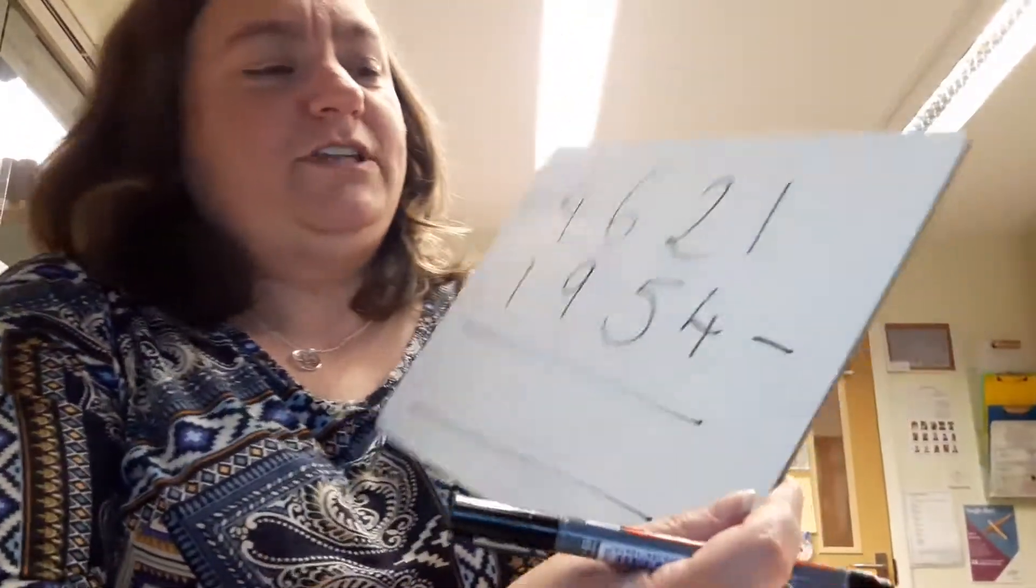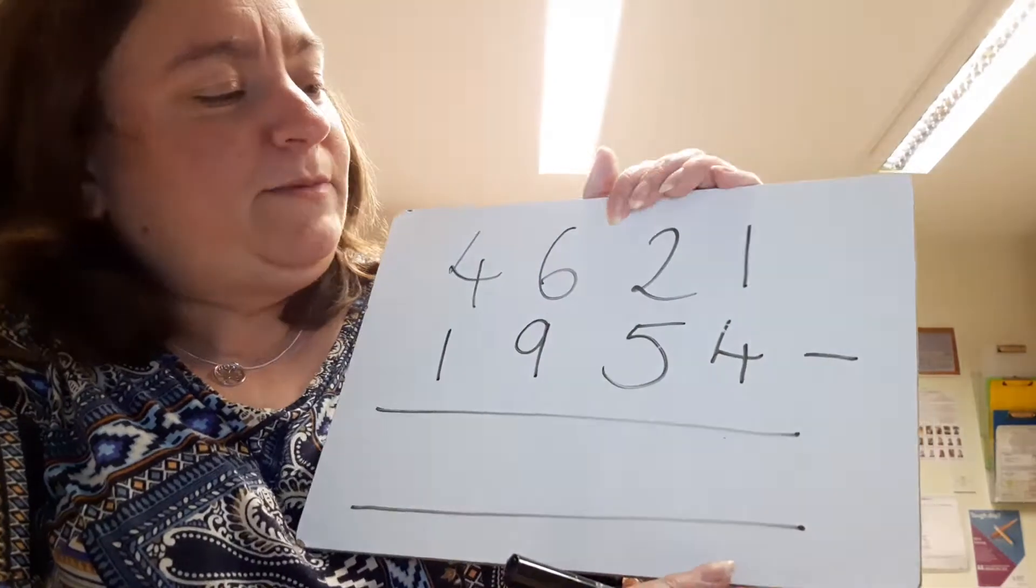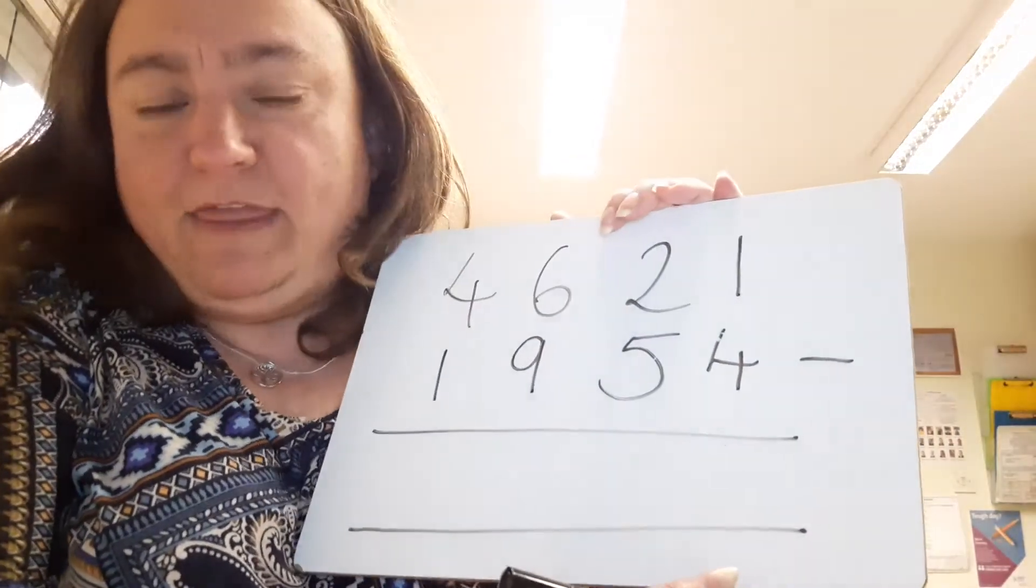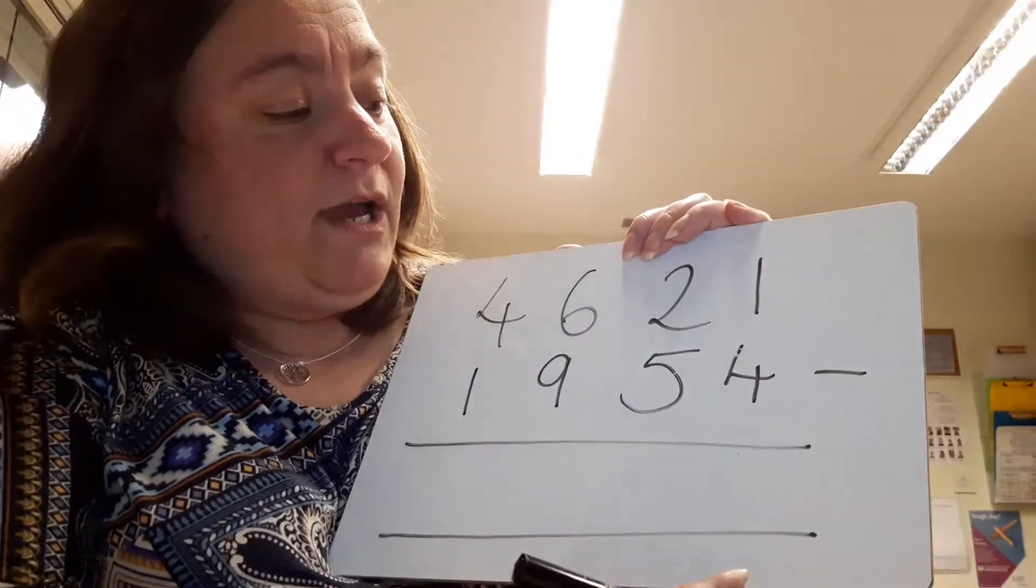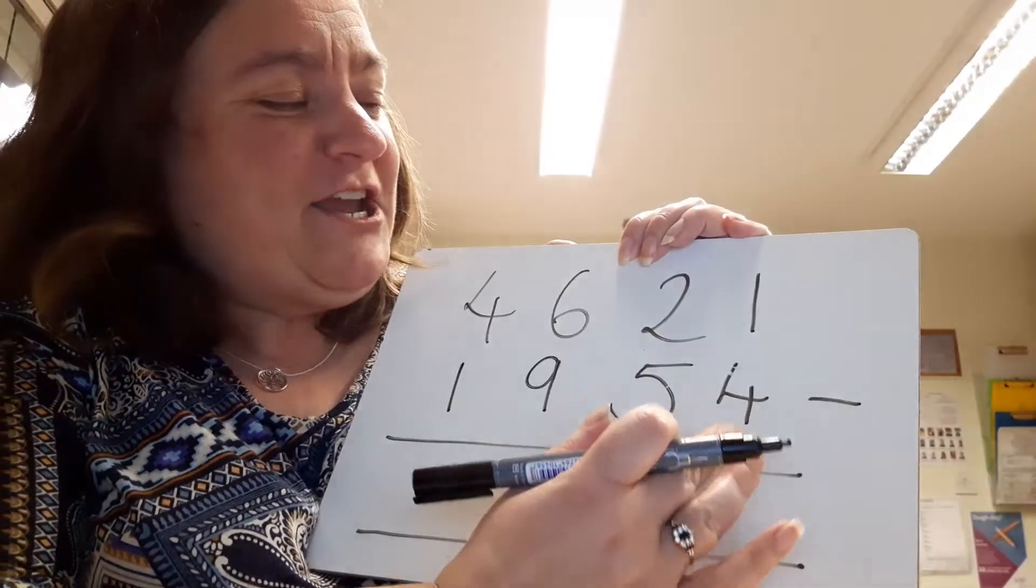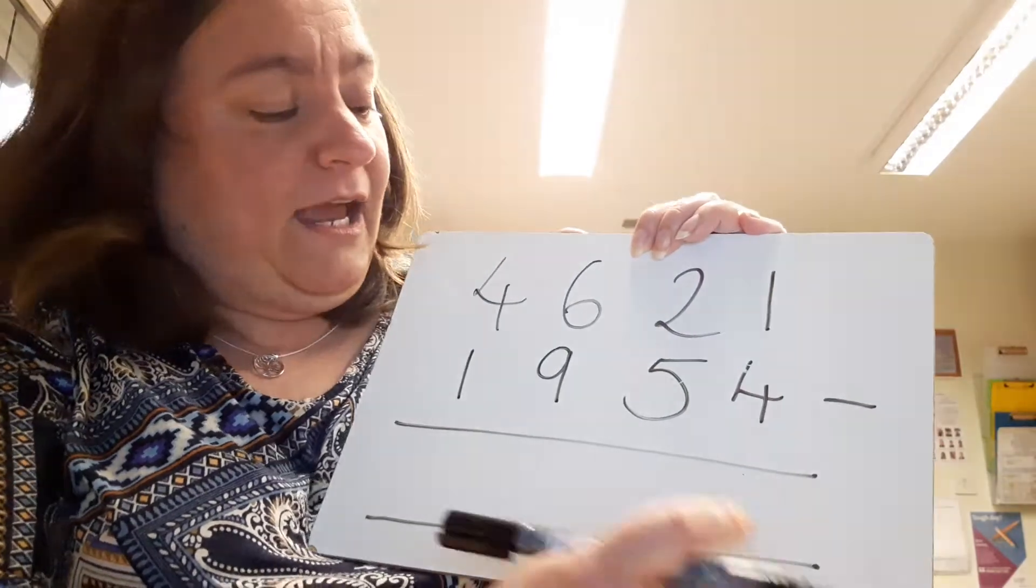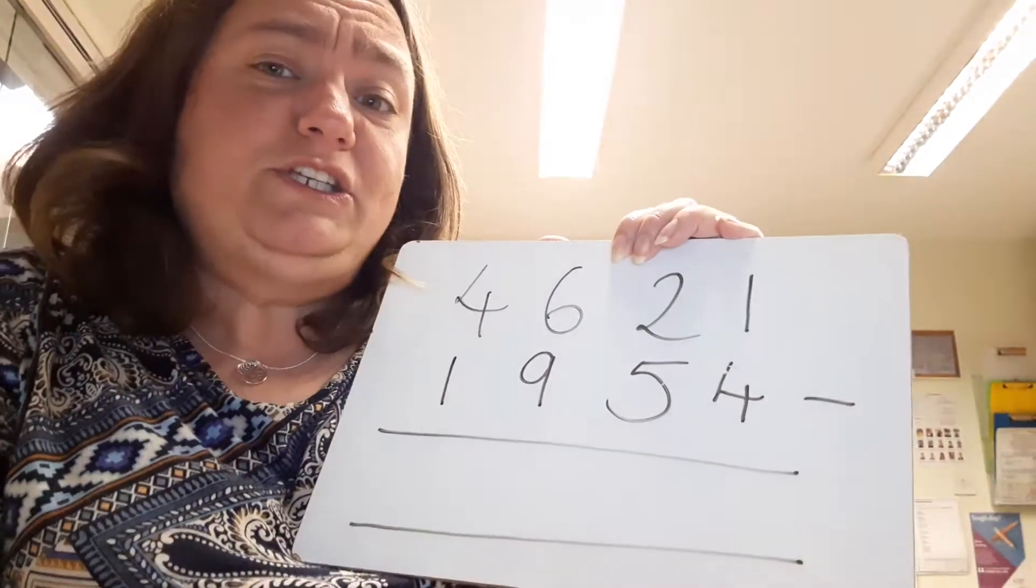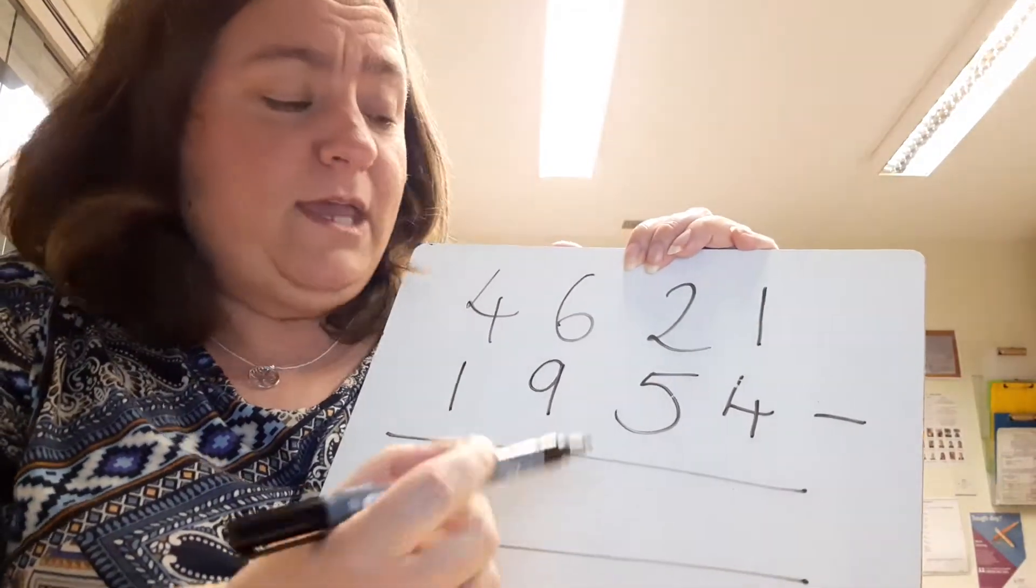Right, Sycamore class, this video is going to show us how to do subtraction using a formal written method. So again with subtraction, we need to start exactly the same as with addition—we need to start with the smallest column. Now it's really important, one thing you need to check before we start anything, is that